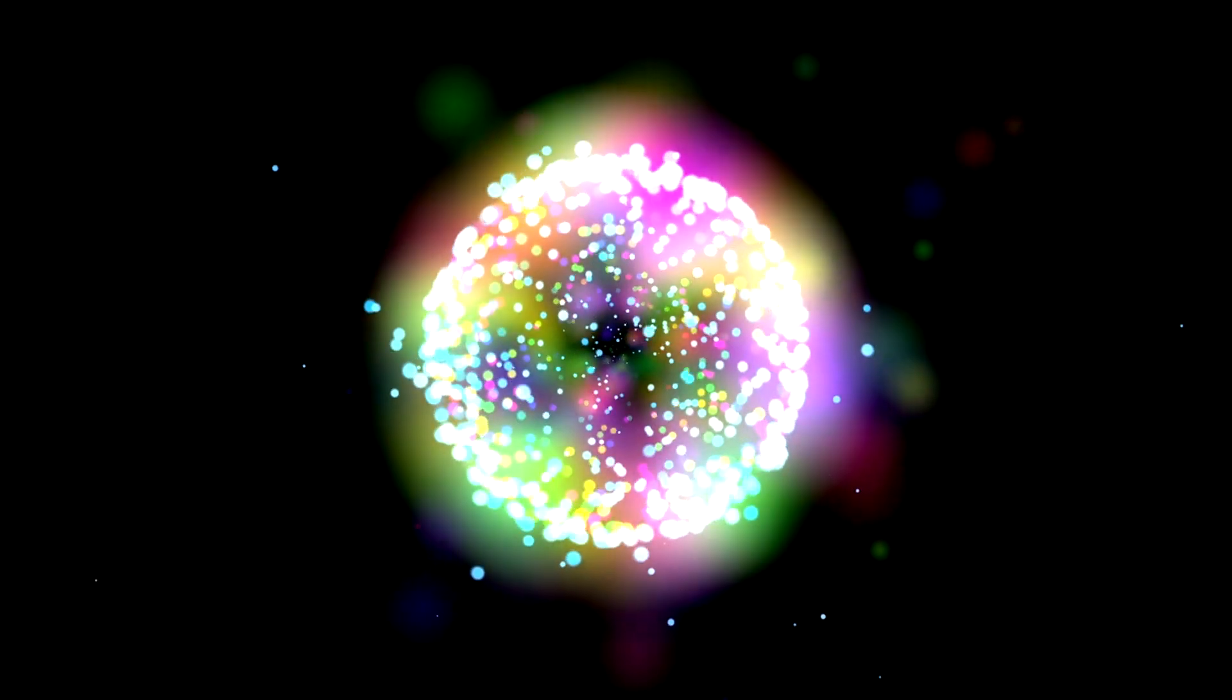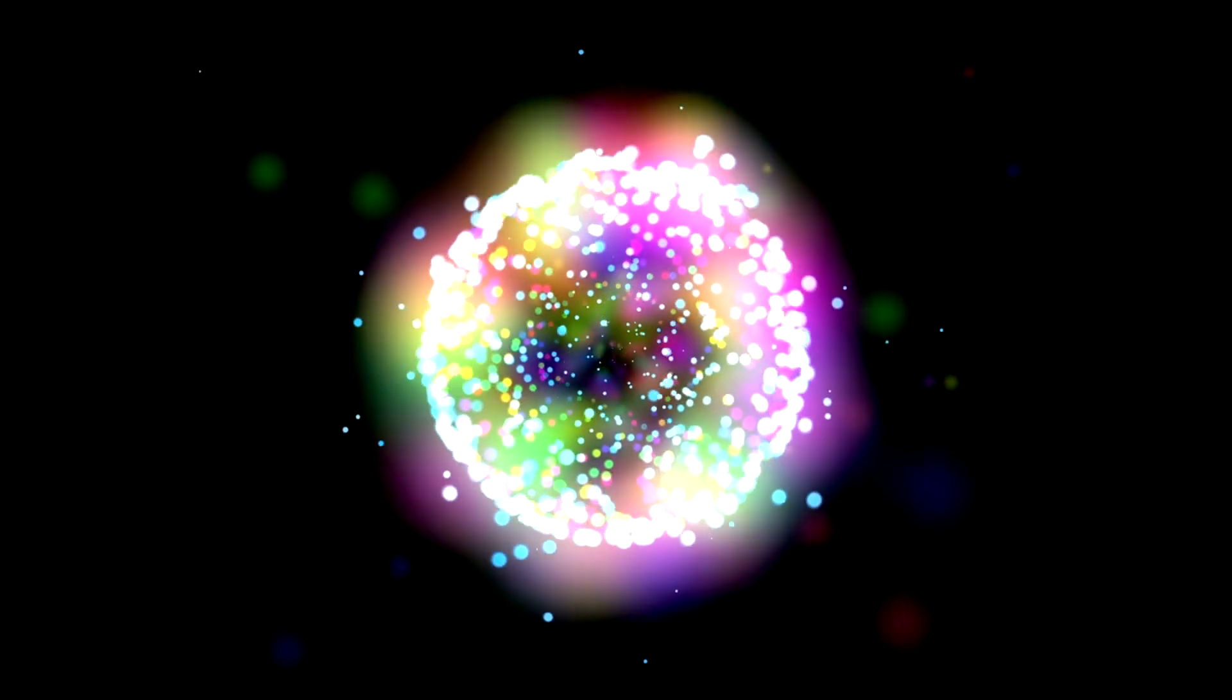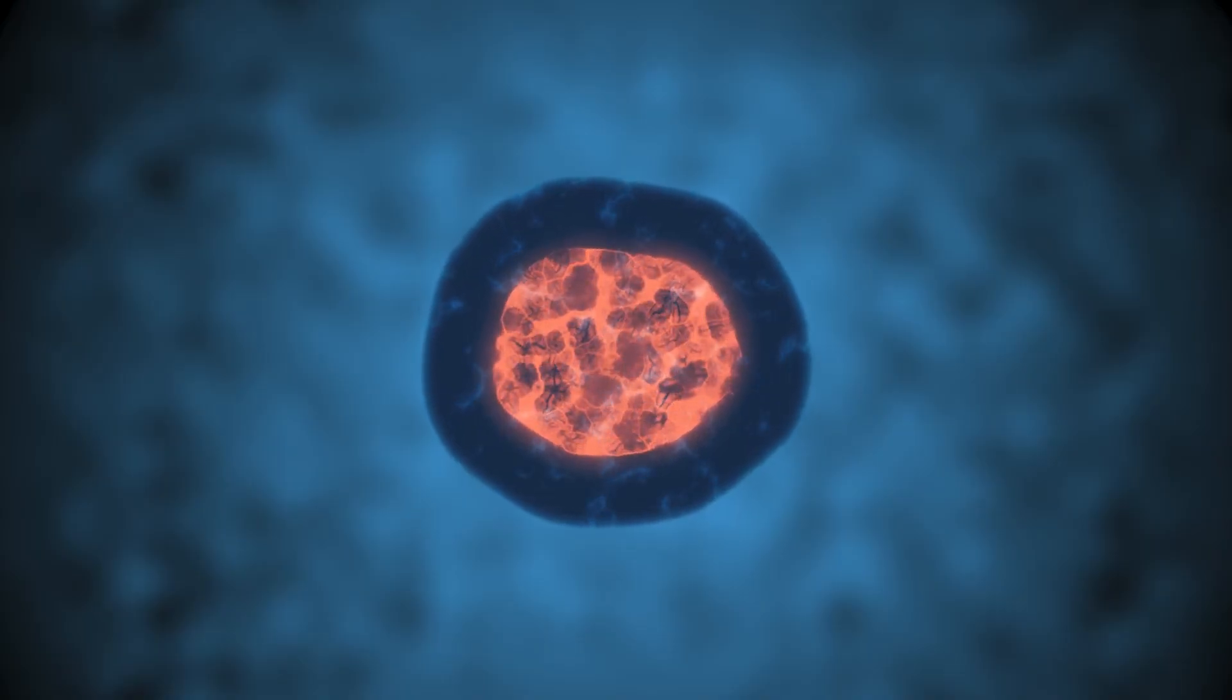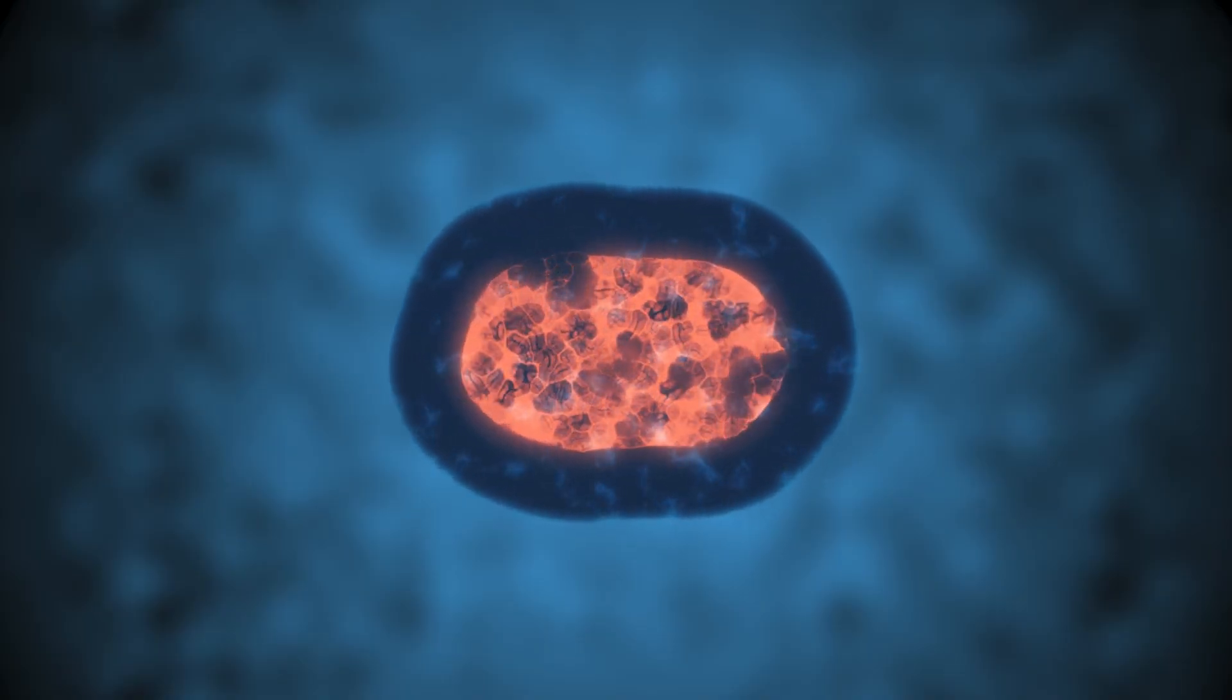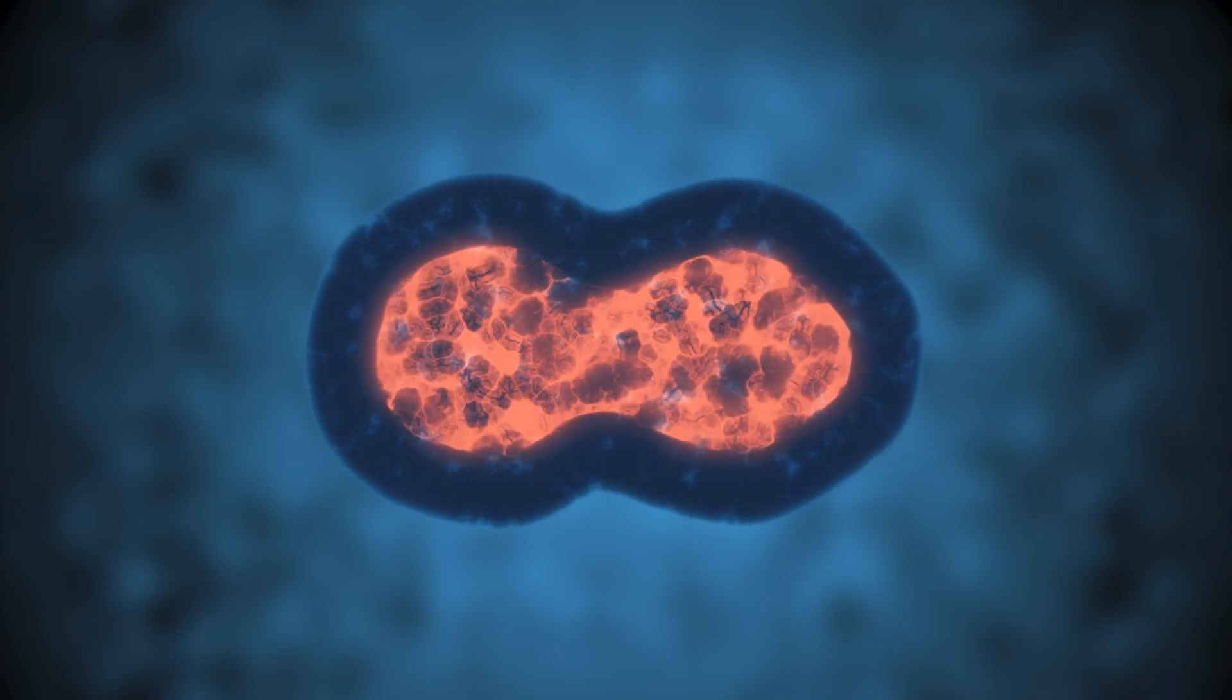One of the key components of cell theory is that all cells come from pre-existing cells. This idea was revolutionary when it was first proposed and emphasized the continuity of life. It implies that cells do not just spontaneously generate but rather divide and replicate to form new cells.